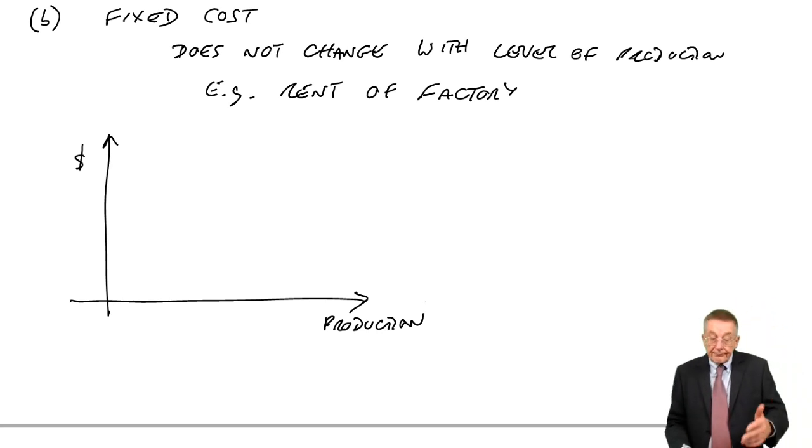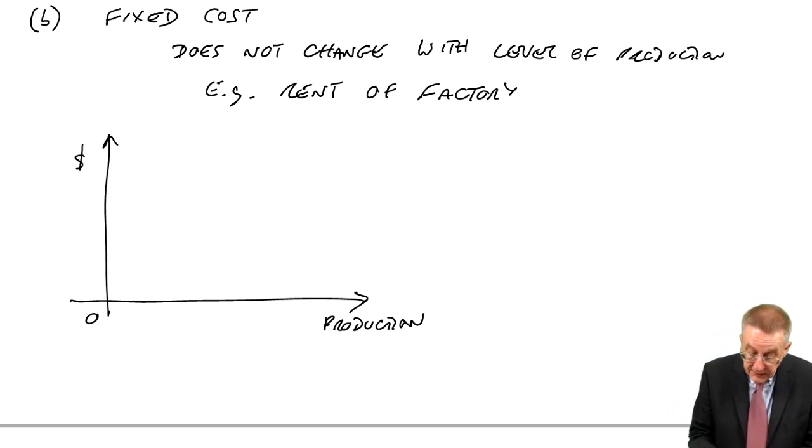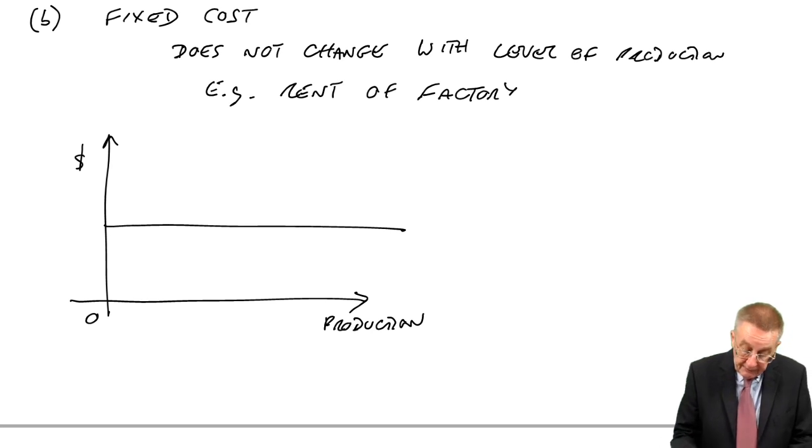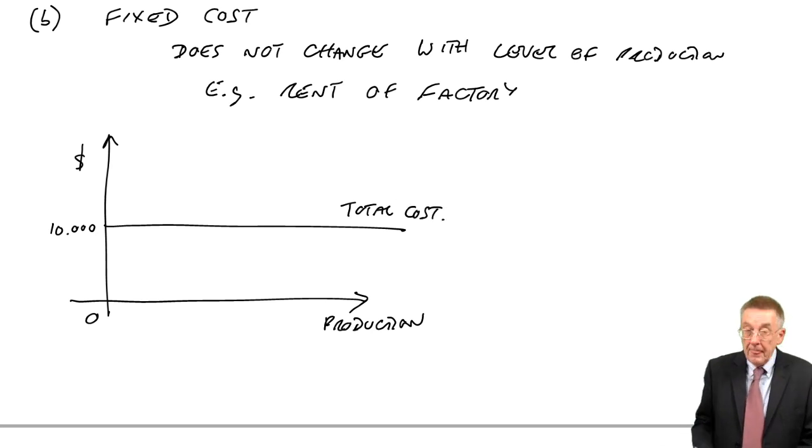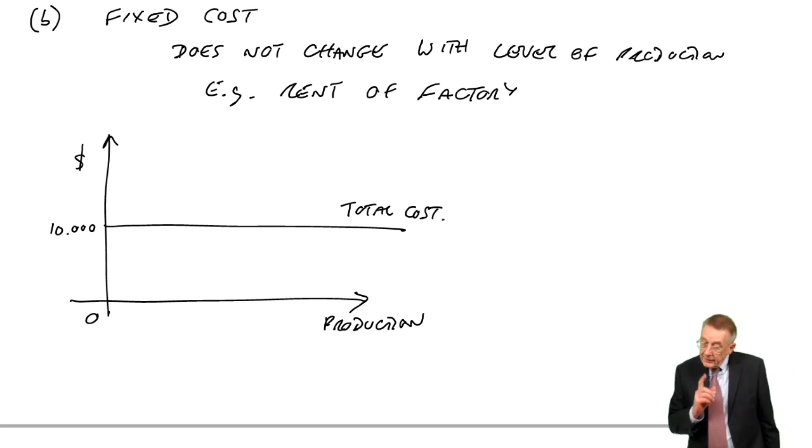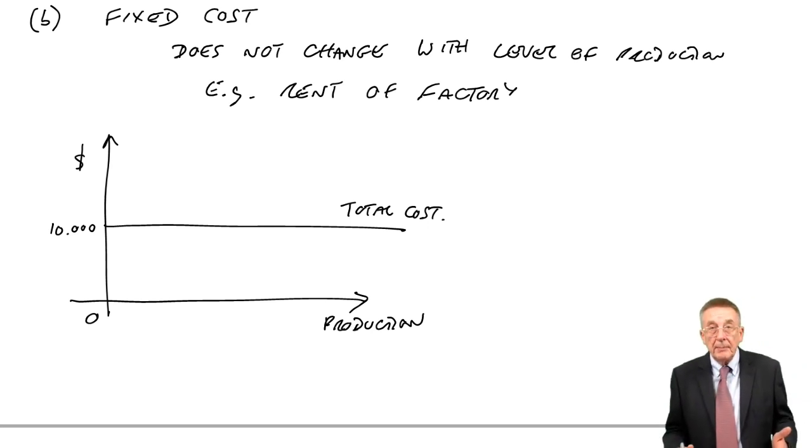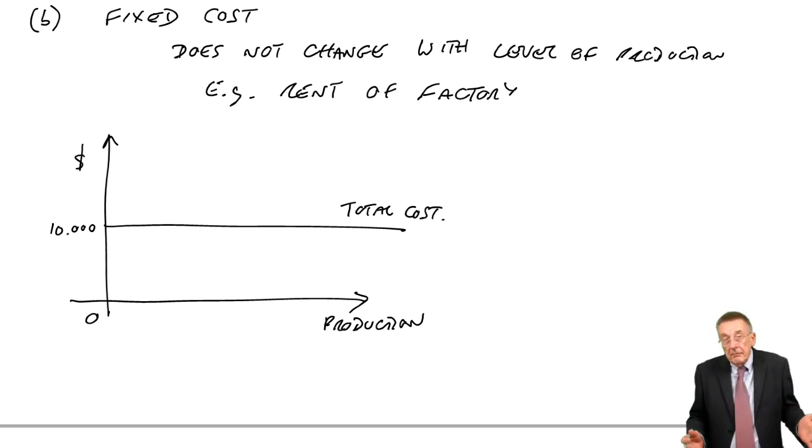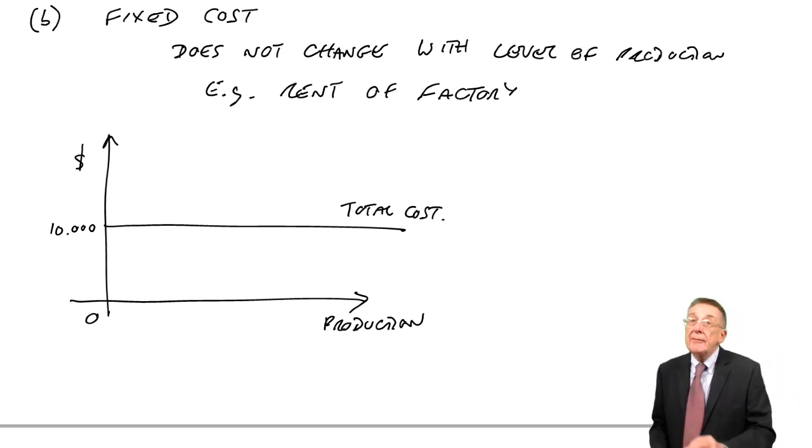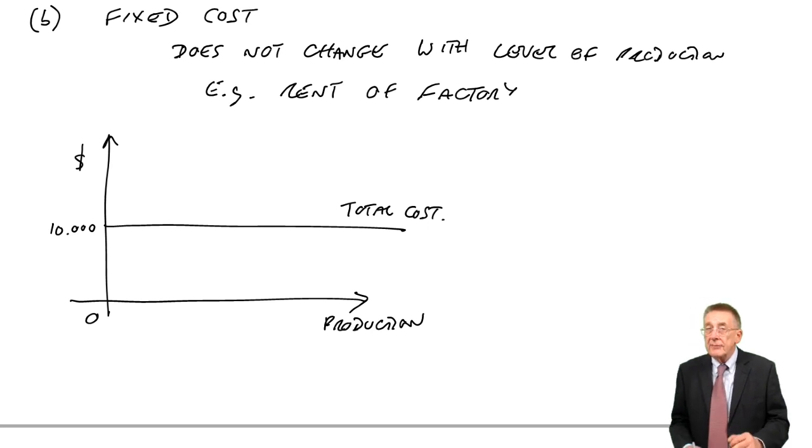If you're asked to identify a graph of this, the rent of our factory, however many units are produced, it's fixed, let's say $10,000. One neat thing, though, by definition it's a fixed cost. Incidentally, it doesn't mean it's never going to change. Rent of the factory might go up next year. So it's not fixed at $10,000 forever. But the point is, it doesn't change with the level of production. That's what makes it a fixed cost.